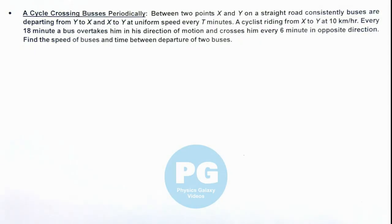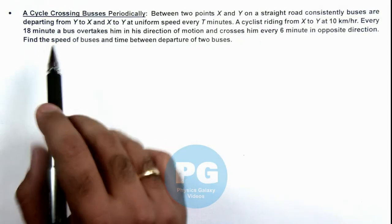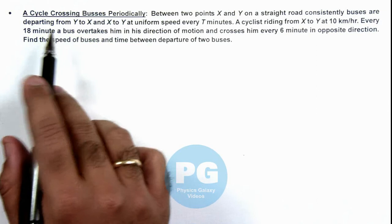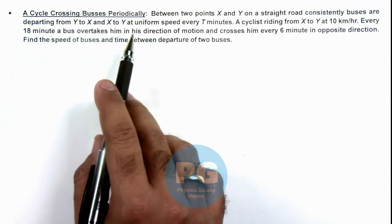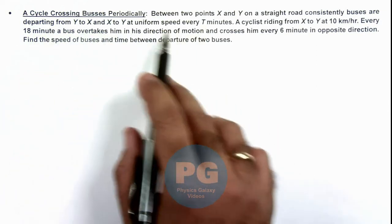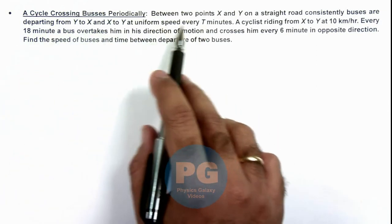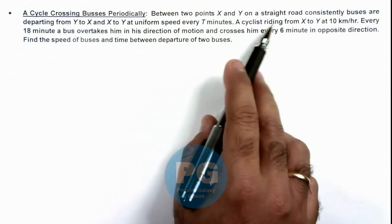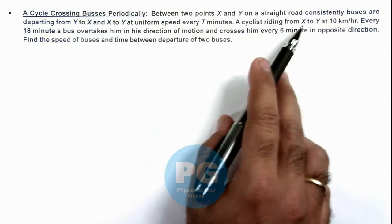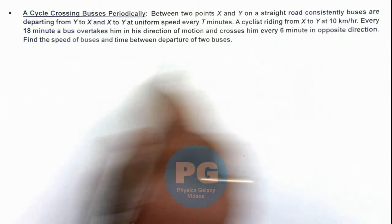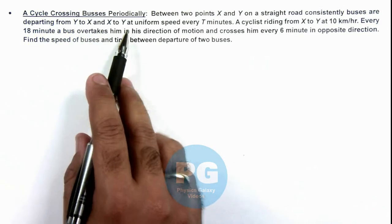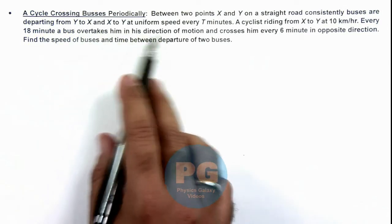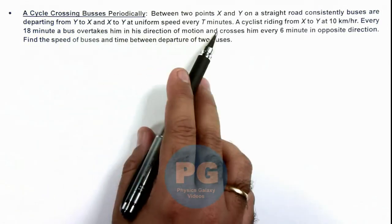In this illustration, we'll discuss the situation when a cyclist is crossing buses periodically. We are given that between 2 points X and Y on a straight road, buses are consistently departing from Y to X and X to Y at a uniform speed every T minutes.